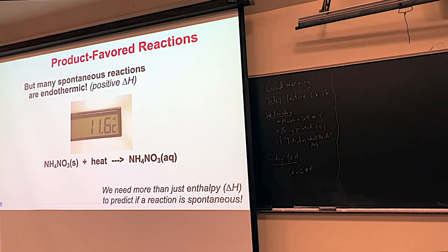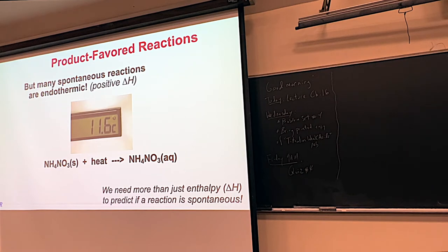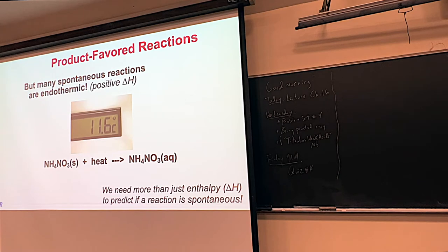Most reactions that are spontaneous are exothermic — you can feel the heat being generated. This one would feel cold. So what this tells us is that we need more than enthalpy to describe when a reaction is going to occur or not occur. Most of the time, exothermic reactions with negative delta H's will be enough to tell us yes, this reaction will occur. But in this case we have an endothermic value and something is still happening. We need a better model to describe when a reaction will occur or won't occur — when it's spontaneous or non-spontaneous.